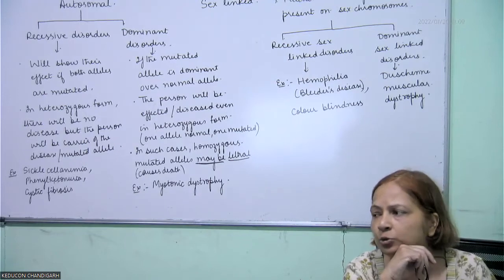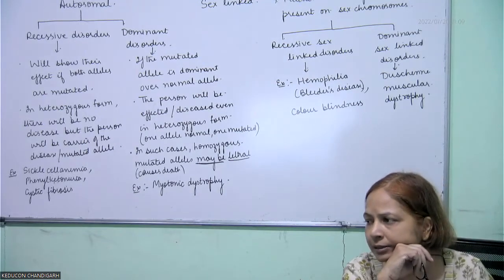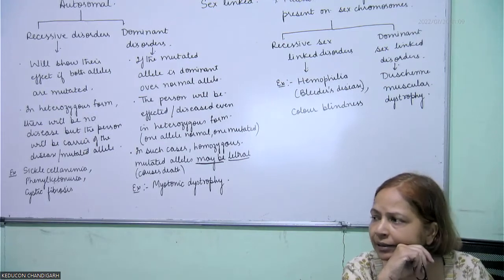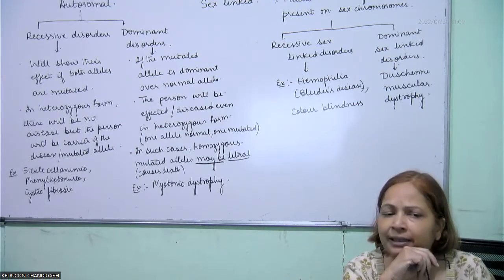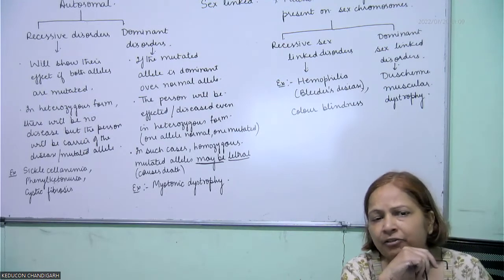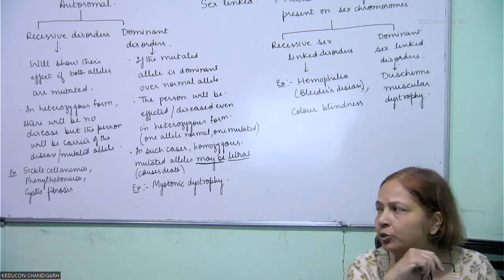Phenylketonuria can be diagnosed by blood test or urine test of neonates — neonates means newborns. This is phenylketonuria, an inherited error of metabolism.